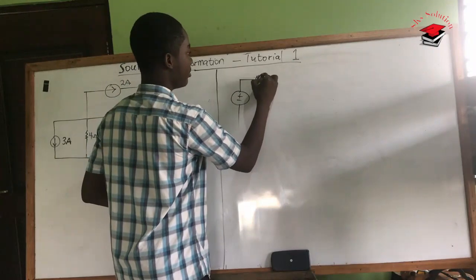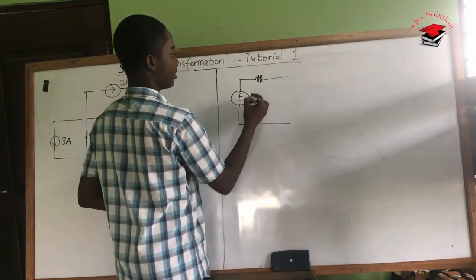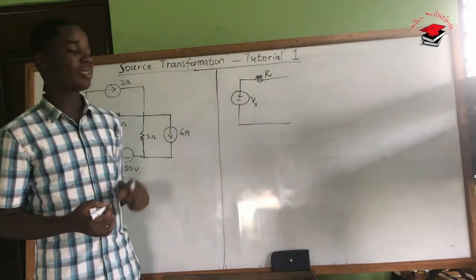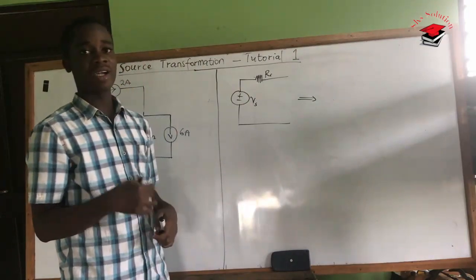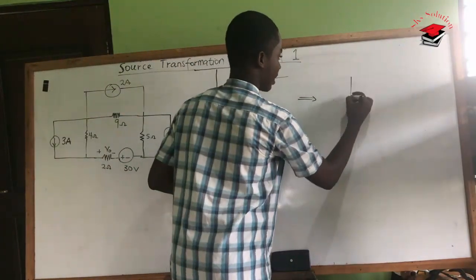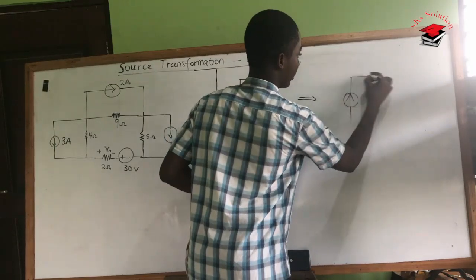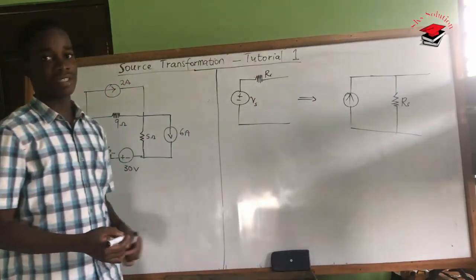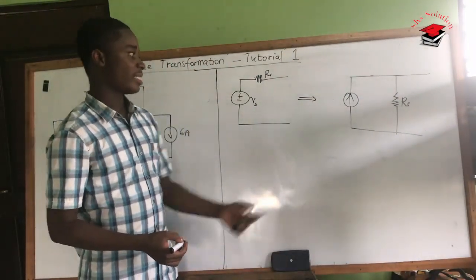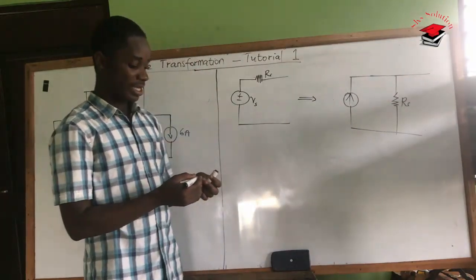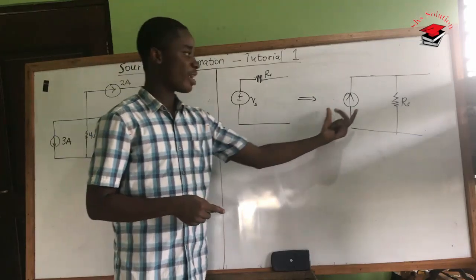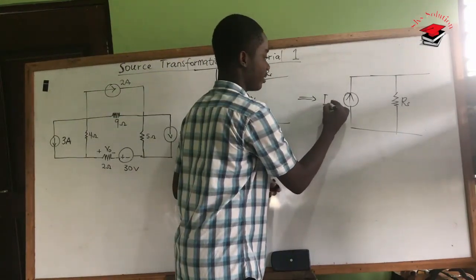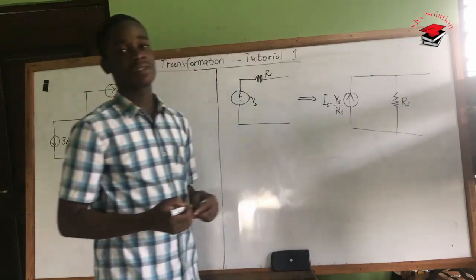A voltage source connected in series with a resistor — if I have a voltage Vx connected in series to resistor Rx — the transformation says we can change this to a current source, and that current source will be in parallel with the resistor Rx. The value of this current source, by Ohm's law, is I = V/R, so the current is Vs over Rs.